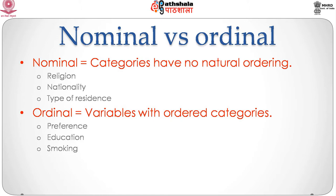So firstly, nominal versus ordinal categories. We have previously started to look at 2 by 2 tables, which is two variables, both of which can be coded as binary variables. In this situation, it really does not matter if the categories can be ordered or not.